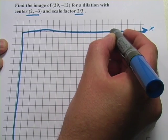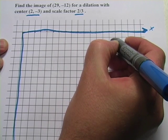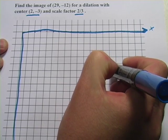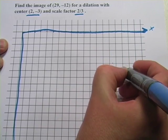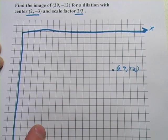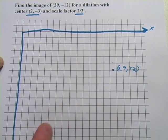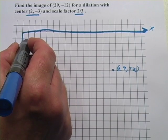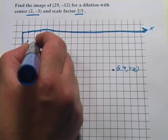So 29 would be here and then it's -12, so 2, 4, 6, 8, 10, 12. So there is (29, -12). And now I'm going to put in my center of dilation that says (2, -3). So here's 2 and -3. So there's my center, (2, -3).